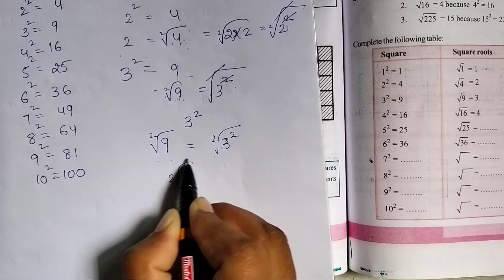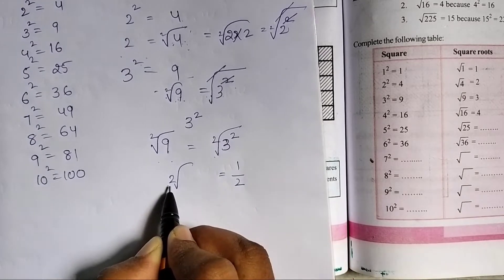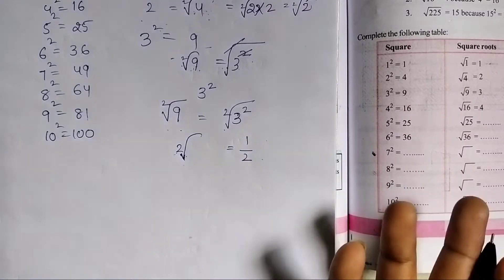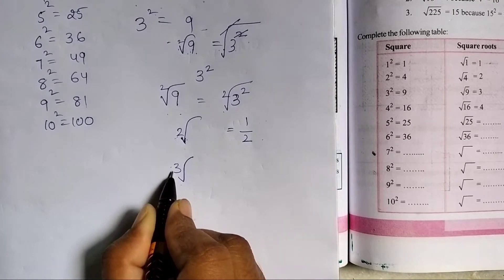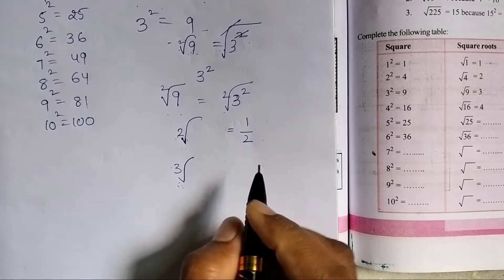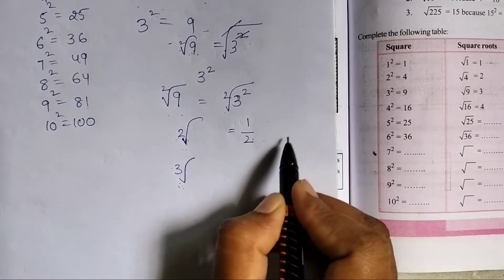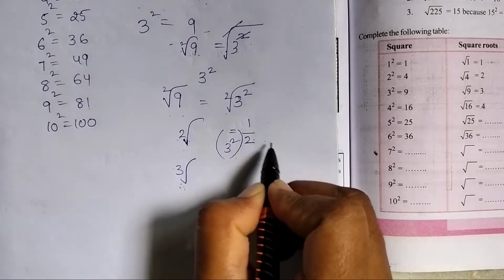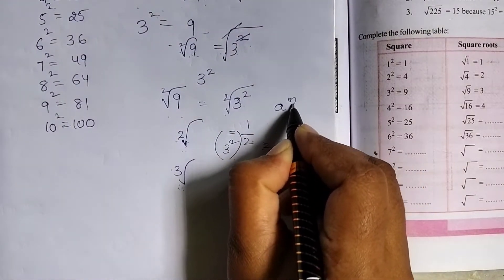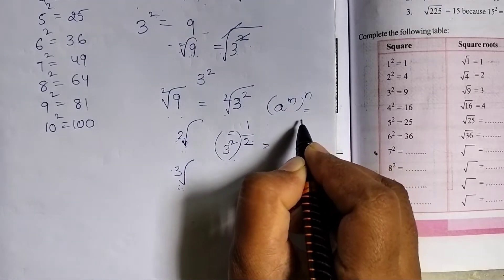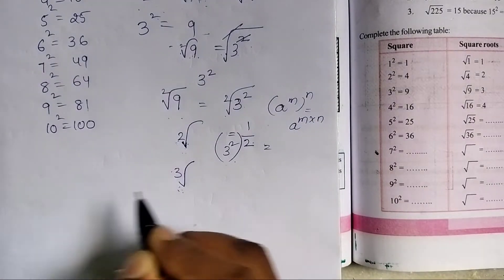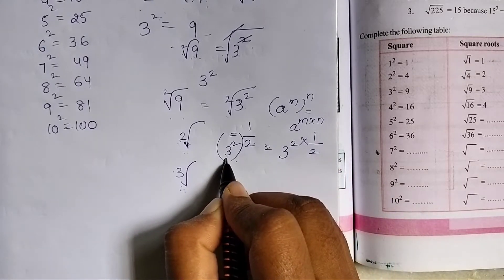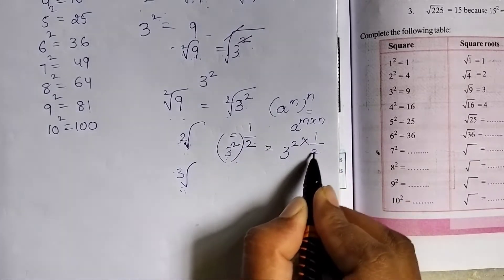We will say the root is 1 by 2. The root index is 1 by 2. In exponents, a to the power of m, whole to the power of n, we can write a to the power of m into n. So 3 squared is 1 by 2; m is 2 and n is 1 by 2.